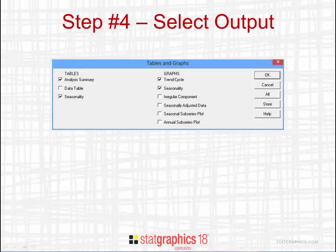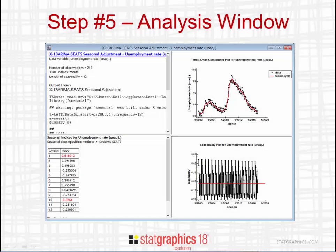Once the options are selected, you then choose the tables and graphs you wish to see. While R performs the calculations, all of the tables and graphs are created by StatGraphics. Once you press OK, the data will be sent to R, which does the calculations and returns the results to StatGraphics. An analysis window will be created showing the commands sent to R and tabulating things like the seasonal indices, the trend cycle, and the estimated seasonality.